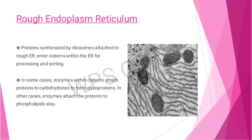Proteins synthesized by ribosomes attached to the rough endoplasmic reticulum enter the cisternae for processing and sorting. In some cases, enzymes within the cisternae attach proteins to carbohydrates to form glycoproteins. In other cases, enzymes attach proteins to phospholipids as well.